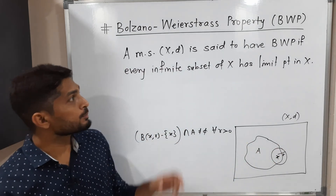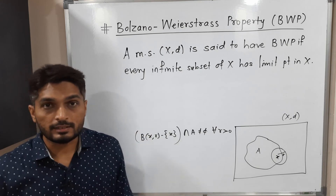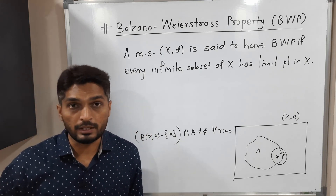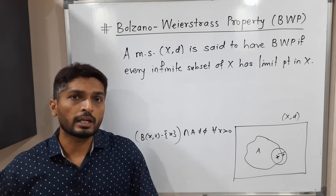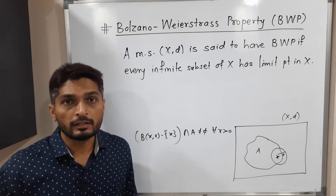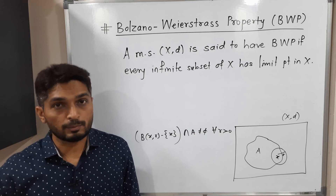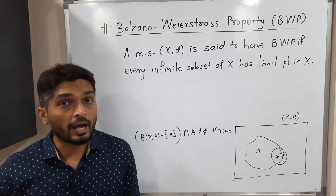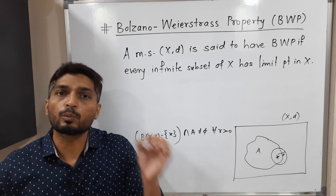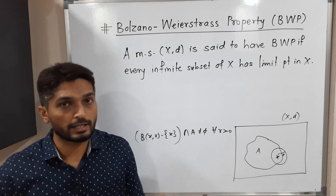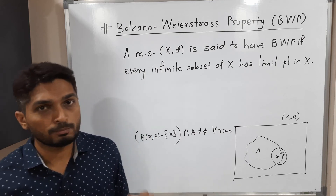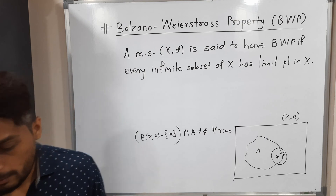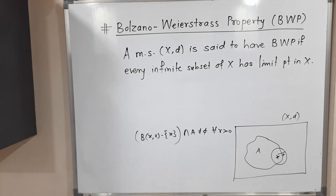So this property says: if (X, d) has BWP, then if you take any arbitrary infinite subset of X, it should have at least one limit point in X. This is BWP. Thank you, see you.